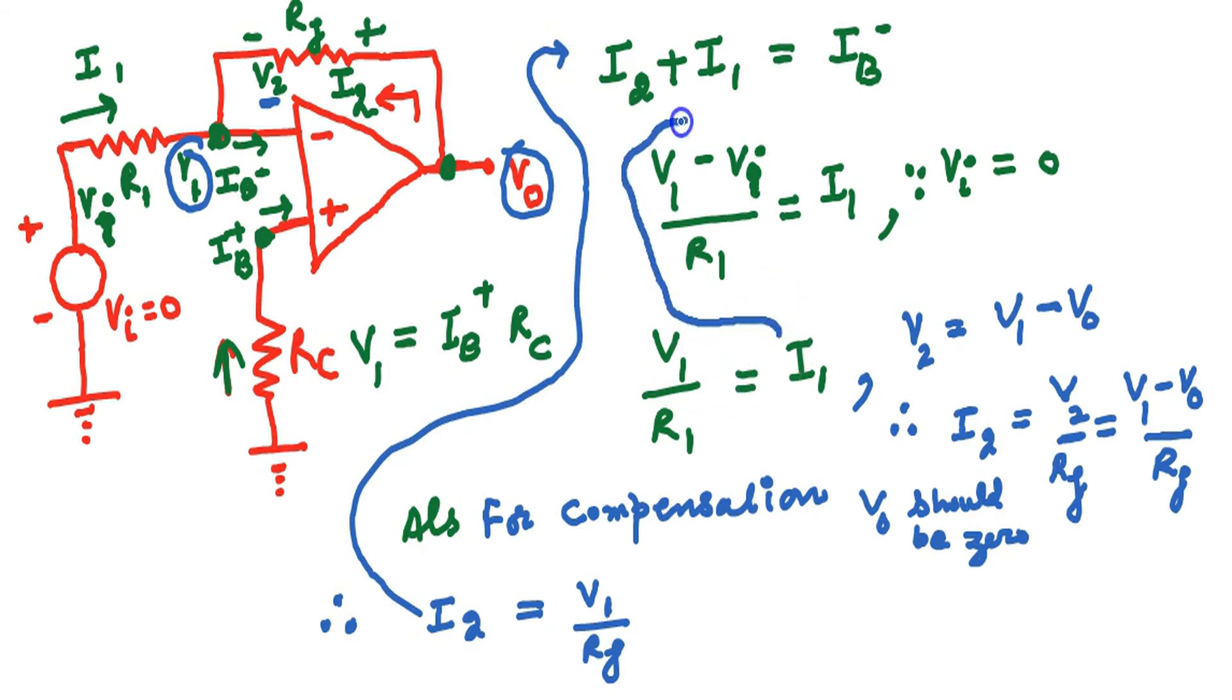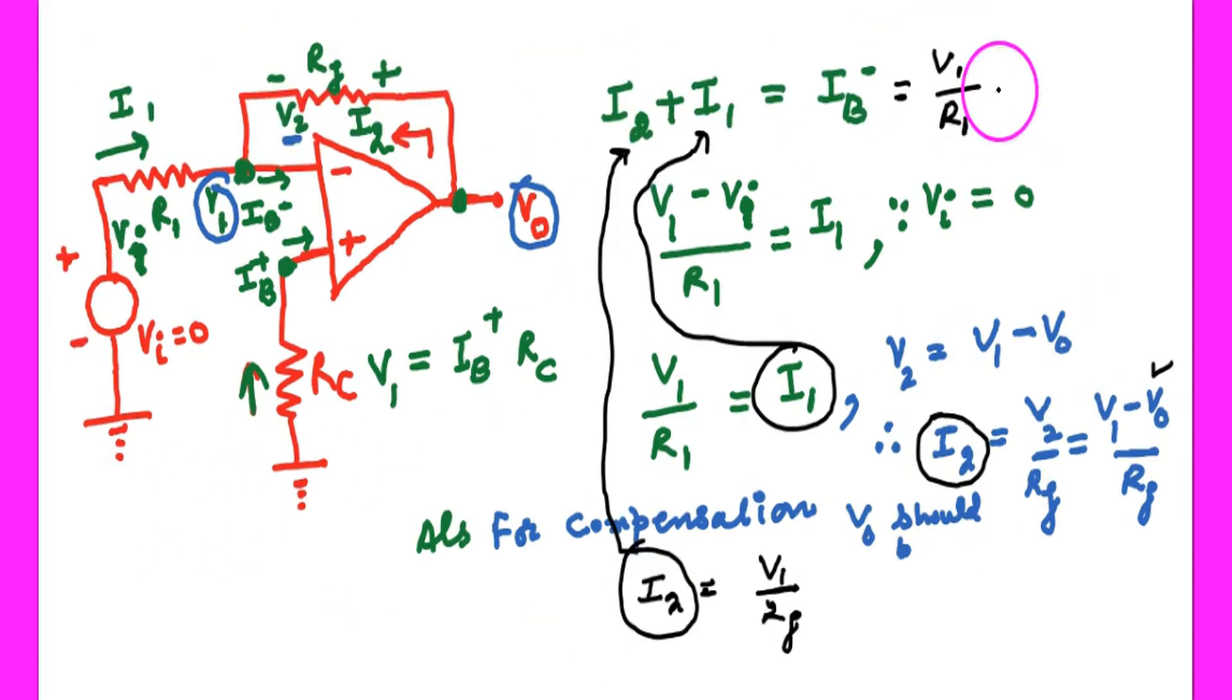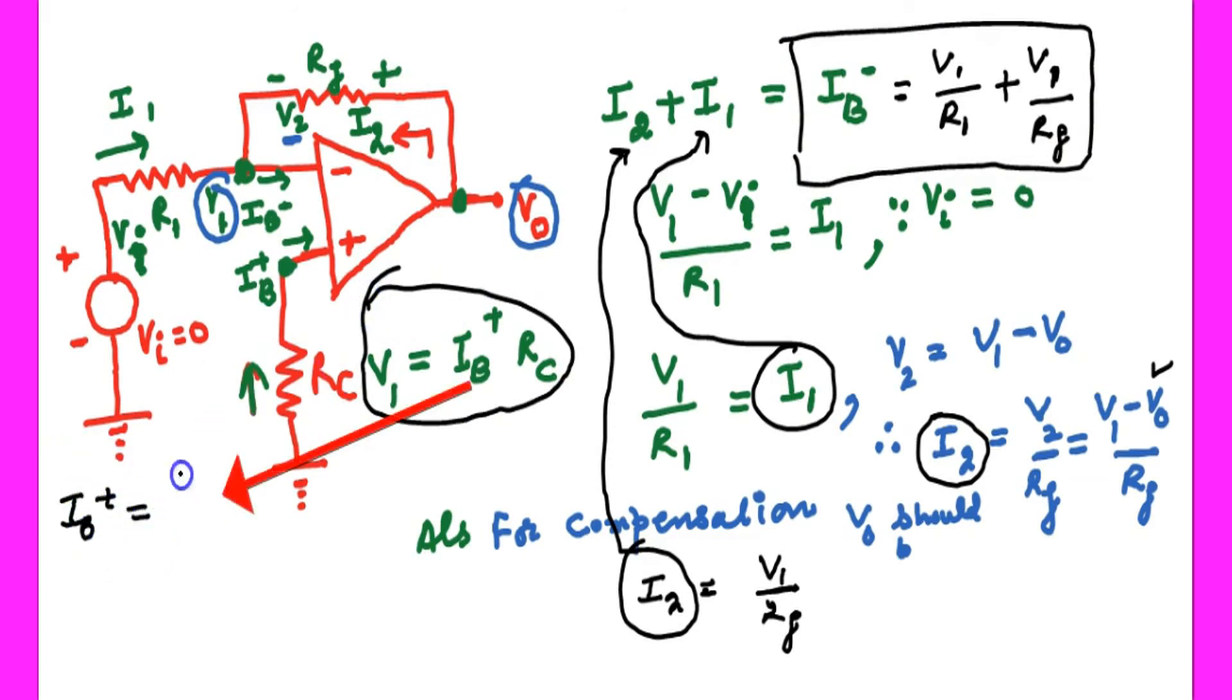Substituting the values of I1 and I2 here. Substituting the values of I1 and I2 minus V0 divided by RF. In this expression, IB minus is replaced by IB plus.